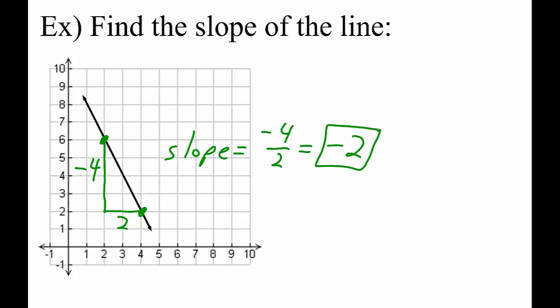After dividing, we get a slope of negative 3. That means for every 3 units down, we go 1 unit over.